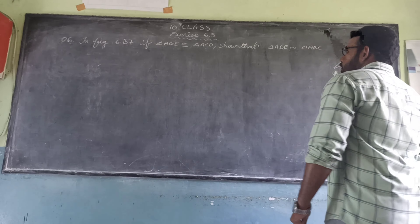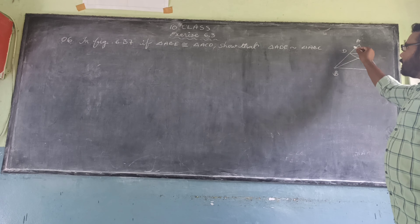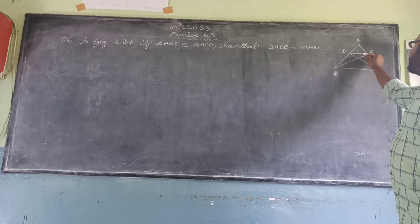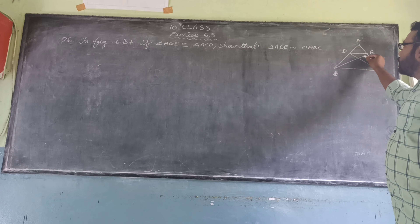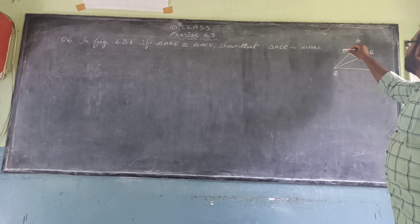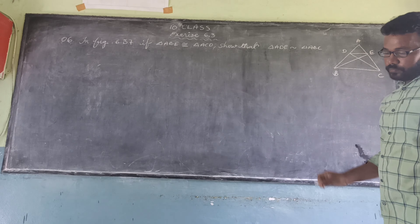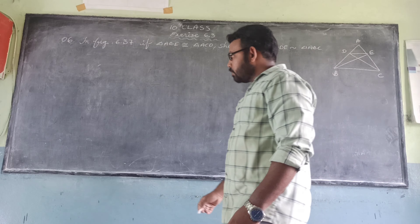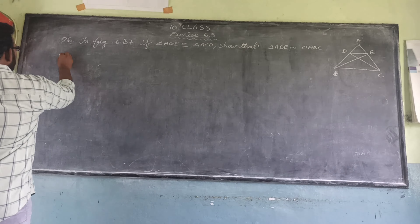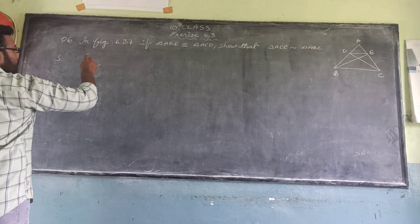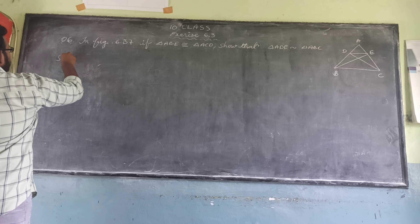If you observe, the given condition is that triangle ABE is congruent to triangle ACD. So we have to prove that ADE is similar to ABC. Solution.